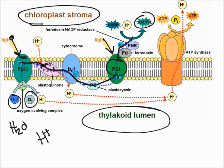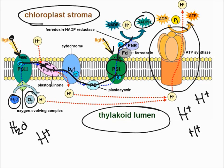After splitting all the water molecules, you have a large concentration of hydrogens in the thylakoid lumen, creating a big concentration difference between the inside and outside. A hydrogen gets pushed through, and a phosphate group becomes attached to an ADP to make ATP.